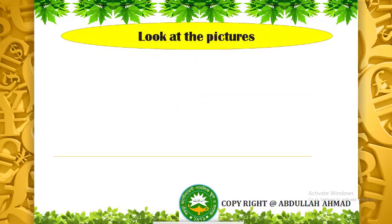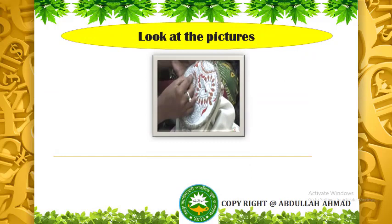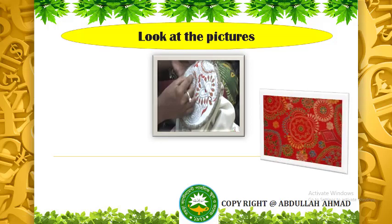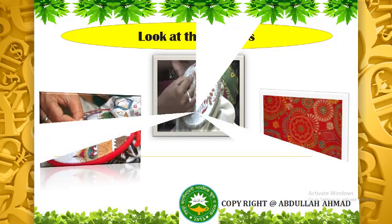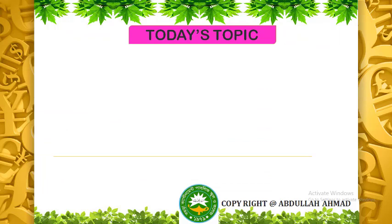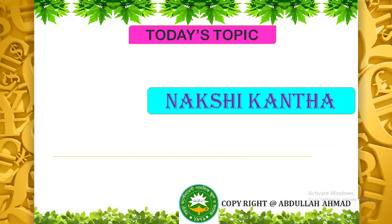Now I am going to show you some pictures so that you can gauge the topic for today's lesson. Picture number 1 — something is going to be done on a piece of cloth. Here is picture 2 and 3. I think by this time you have understood what is the title of the lesson. Yes, it is Noxikatha.